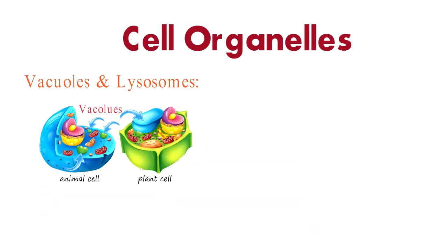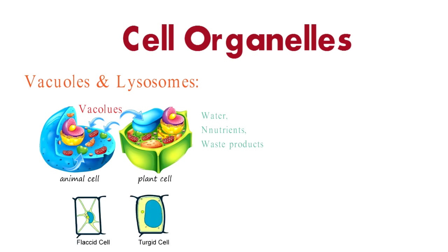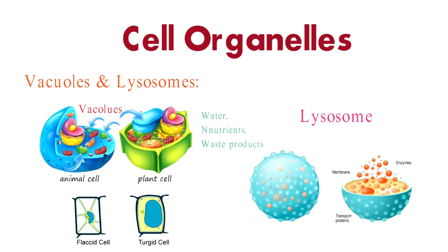Vacuoles are large, membrane-bound sacks that store various substances like water, nutrients, and waste products. They play a role in maintaining cell turgidity in plants and storing materials in animal cells. Lysosomes, on the other hand, are like the cell's recycling centers, containing enzymes that break down waste materials and cellular debris.